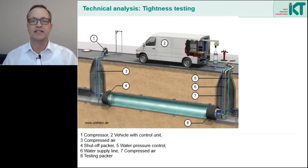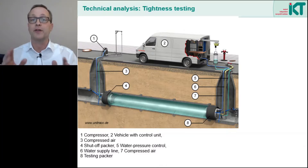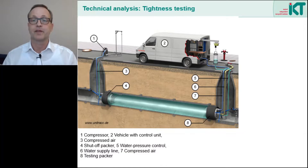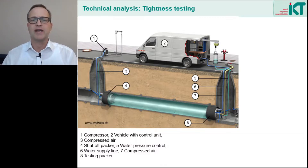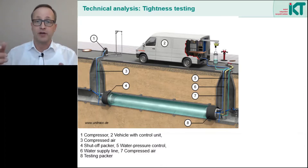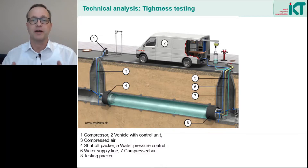Let's start with the tightness testing itself. Here we see a pressure test as it is usually carried out on a sewer section. The section is shut off on both sides from the manhole and then filled with water from the manhole at the lower end. The air escapes at the upper shutoff packer via a venting hose, until the entire pipe is completely filled with water. For the test, the section is then put under a defined pressure. A hose is connected to the tested section and to a vessel on the surface. The sewer section is then under the exact pressure of the water column in the hose. Usually the vessel is raised up to a maximum of 5 meters above the tested section — that is a maximum of 0.5 bar pressure.